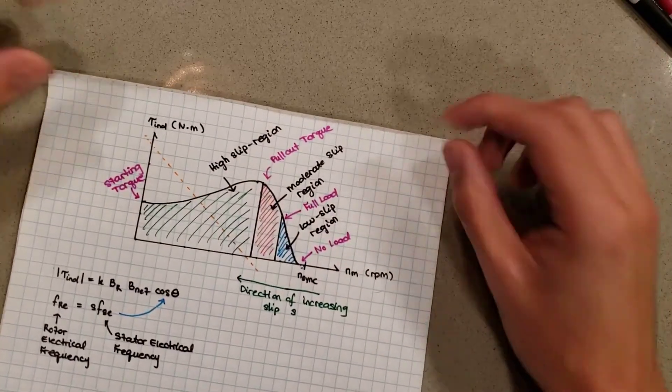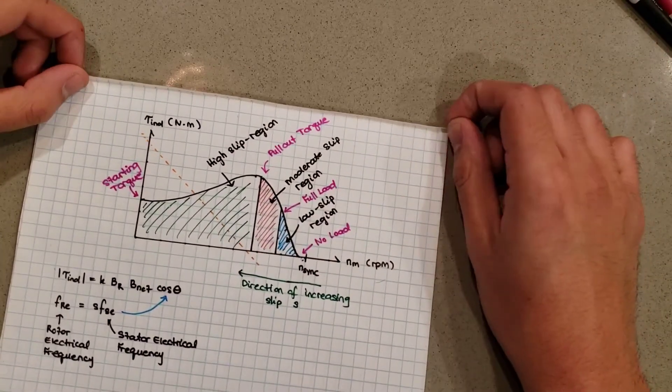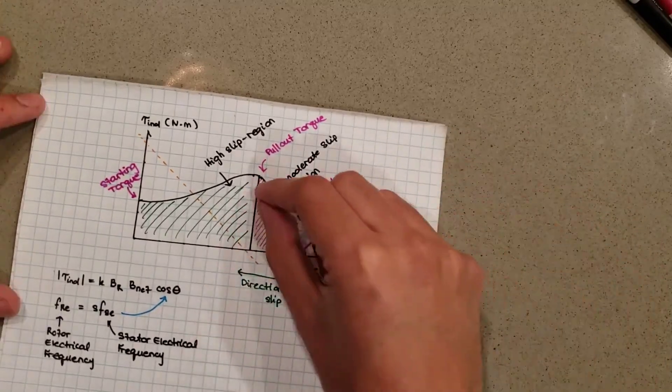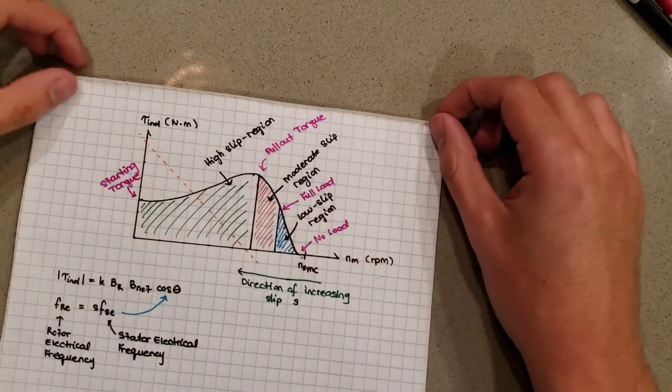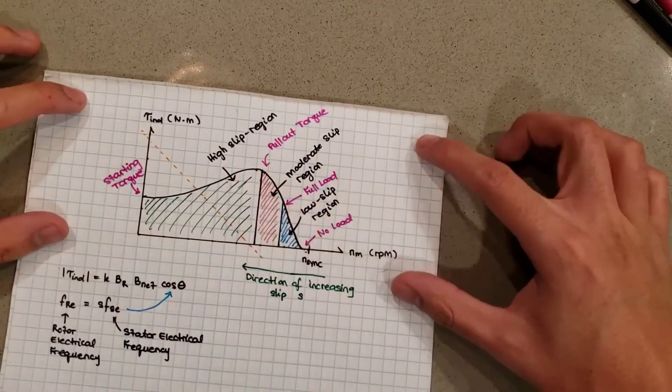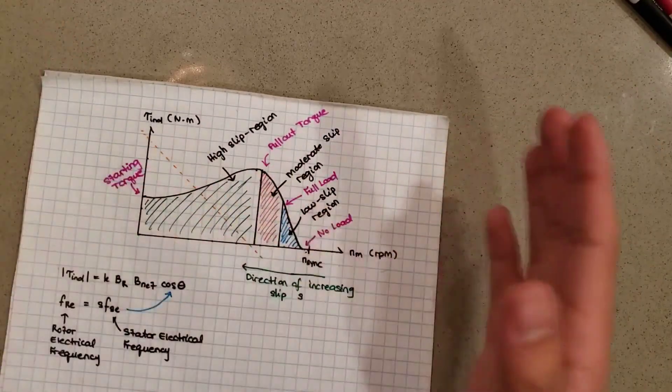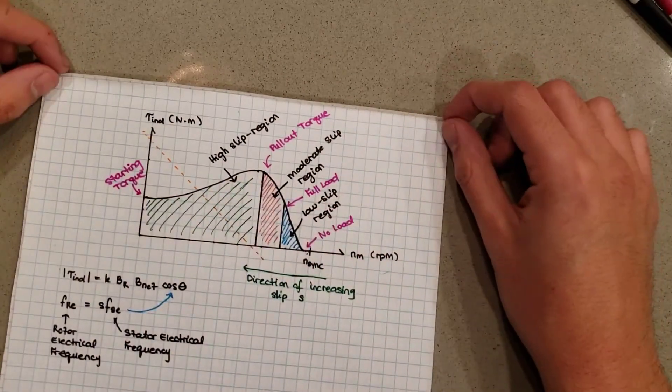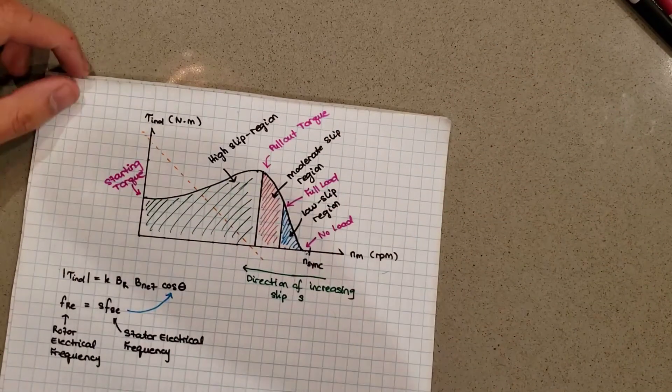Next up, we're going to see what happens—how can we change or what do different curves look like for different motors? I just showed you one induction motor and a pretty classic example, but actually you'll see that there's a wide variety of different curves that induction motors can have. So I'll see you in a second.